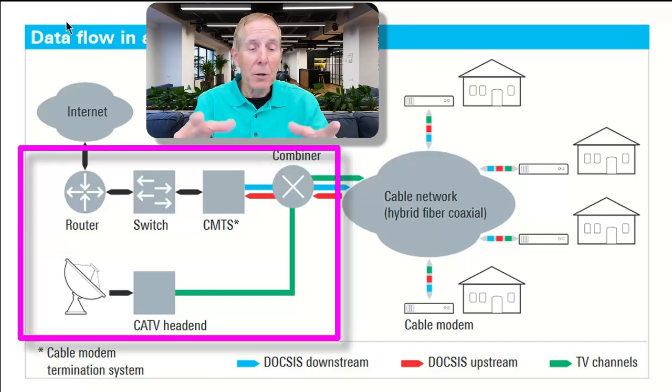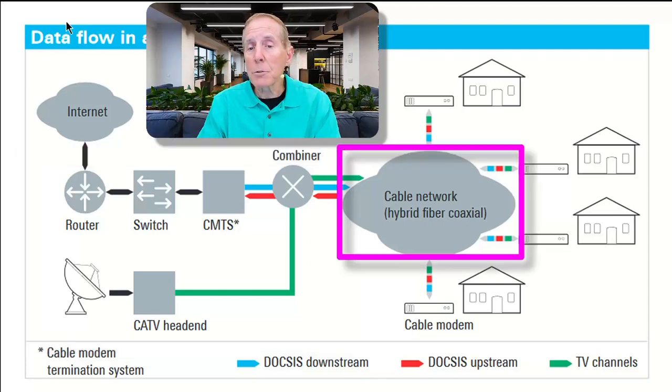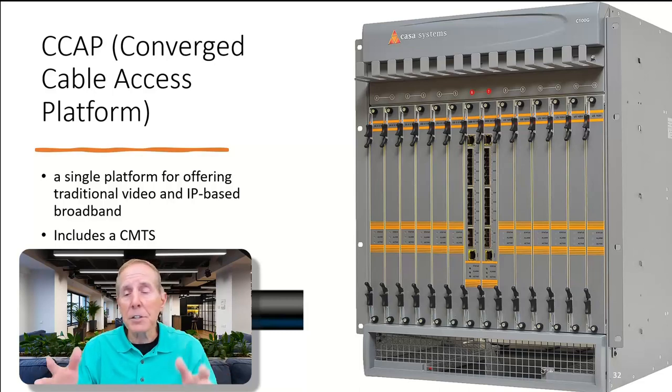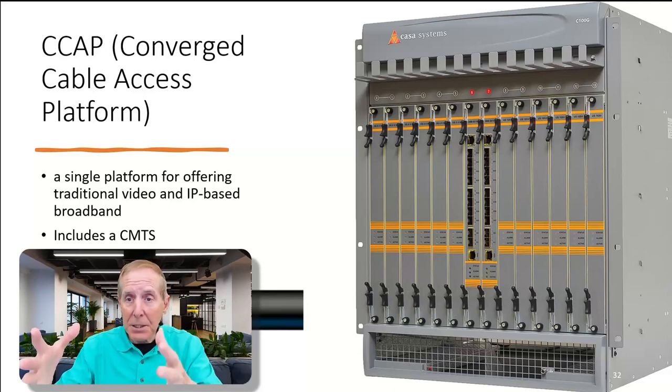Some companies are moving to this piece of equipment called a CCAP, or Converged Cable Access Platform. Basically, it's just taking what they did with video and the CMTS and putting it all into one box. This platform is offering traditional video and IP-based broadband. It includes a CMTS inside.